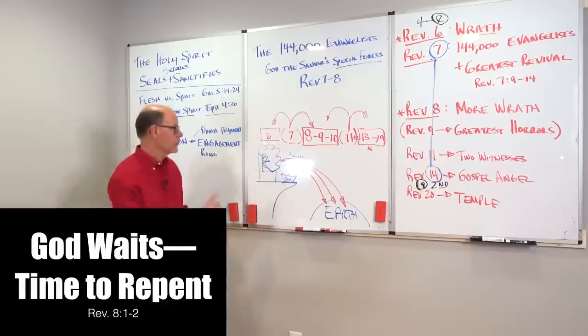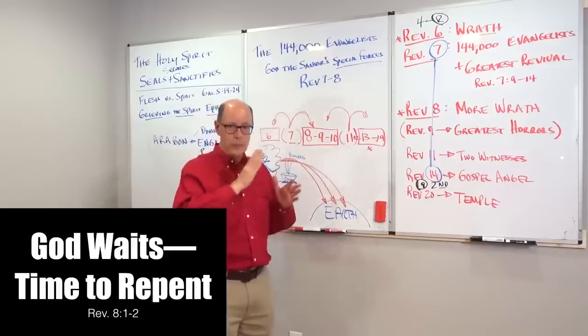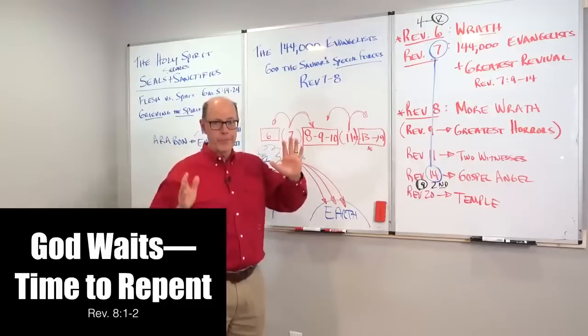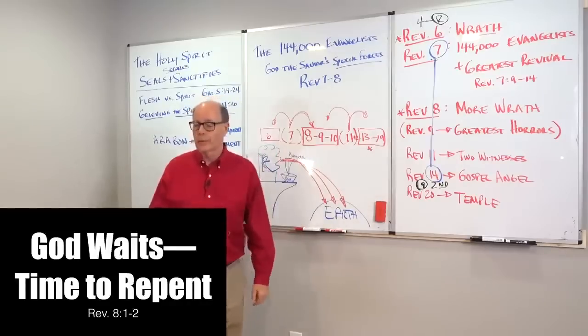Now we're back at this throne scene. There are seven angels that always stand before God. They're each given a trumpet. They're each going to step forward. They're each going to sound. These horrors are going to unfold. But before all that, what happens? Silence. Lesson one, God waits.